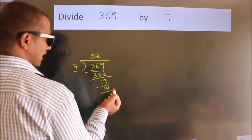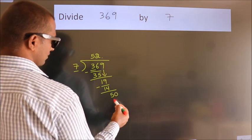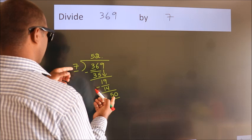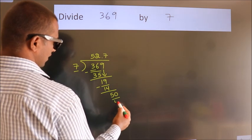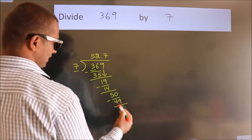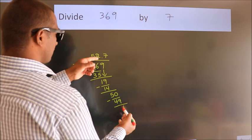So what we do is put a dot, take zero, so 50. A number close to 50 in the seven table is seven sevens, 49. Now we subtract. We get 1.